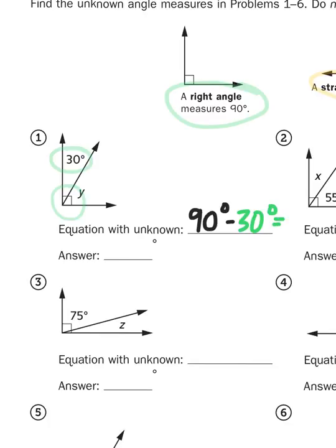If I know that a right angle is 90 degrees and I'm subtracting 30 from it, 9 minus 3 is going to give me 6. So 9 tens minus 3 tens is going to give me 6 tens, otherwise known as 60 degrees.